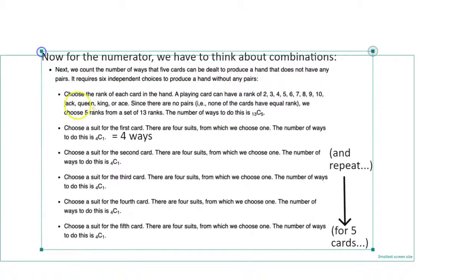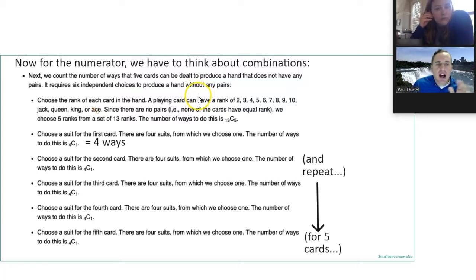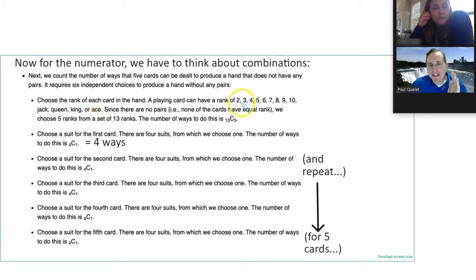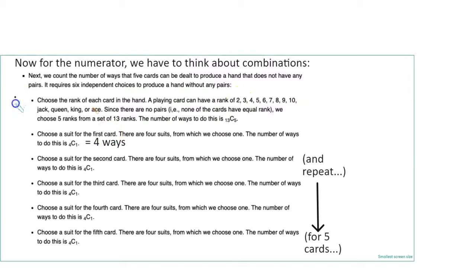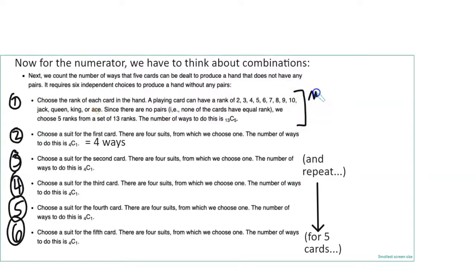Next we want to count the number of ways that five cards can be dealt to produce a hand that does not have any pairs. This requires six independent choices — there are six parts to satisfy. Let's go through parts one through six.